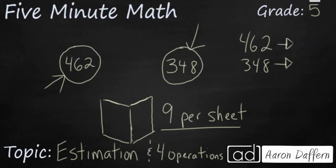First, we need to figure out how many cards we have all together. And I'm going to change 462 to 450, 348 to 350. Those are compatible numbers because they're easy to add mentally. That's about 800 cards.